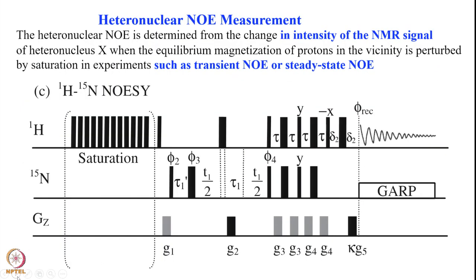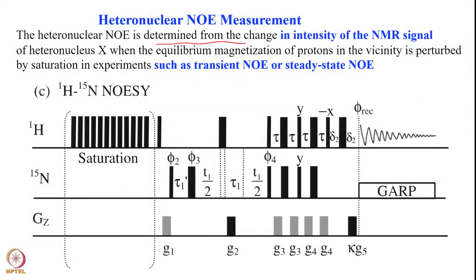Now coming to the heteronuclear NOE. This essentially captures the fast amplitude motion in the picosecond time scale. The heteronuclear NOE is determined from the change in the intensity of the NMR signal of a heteronucleus like N15 when the equilibrium magnetization of a proton in its vicinity is perturbed by saturating.